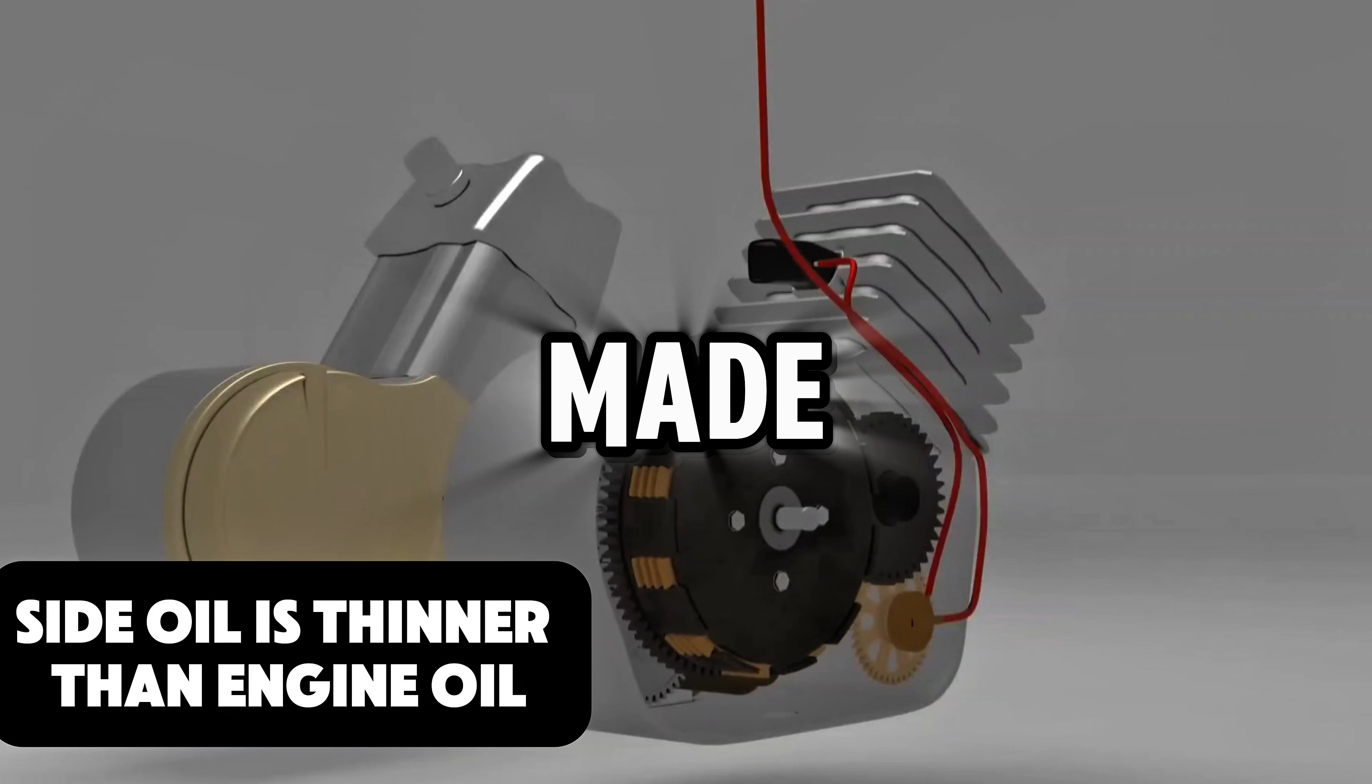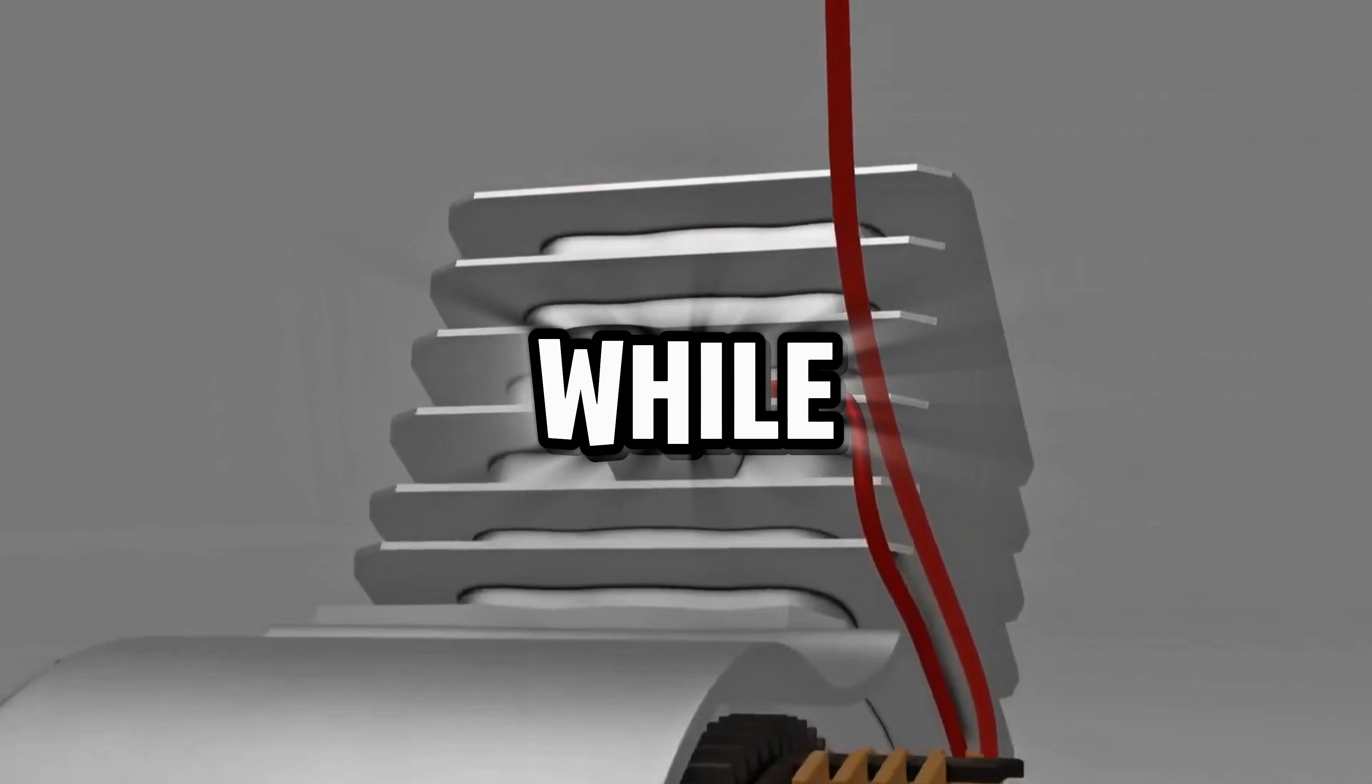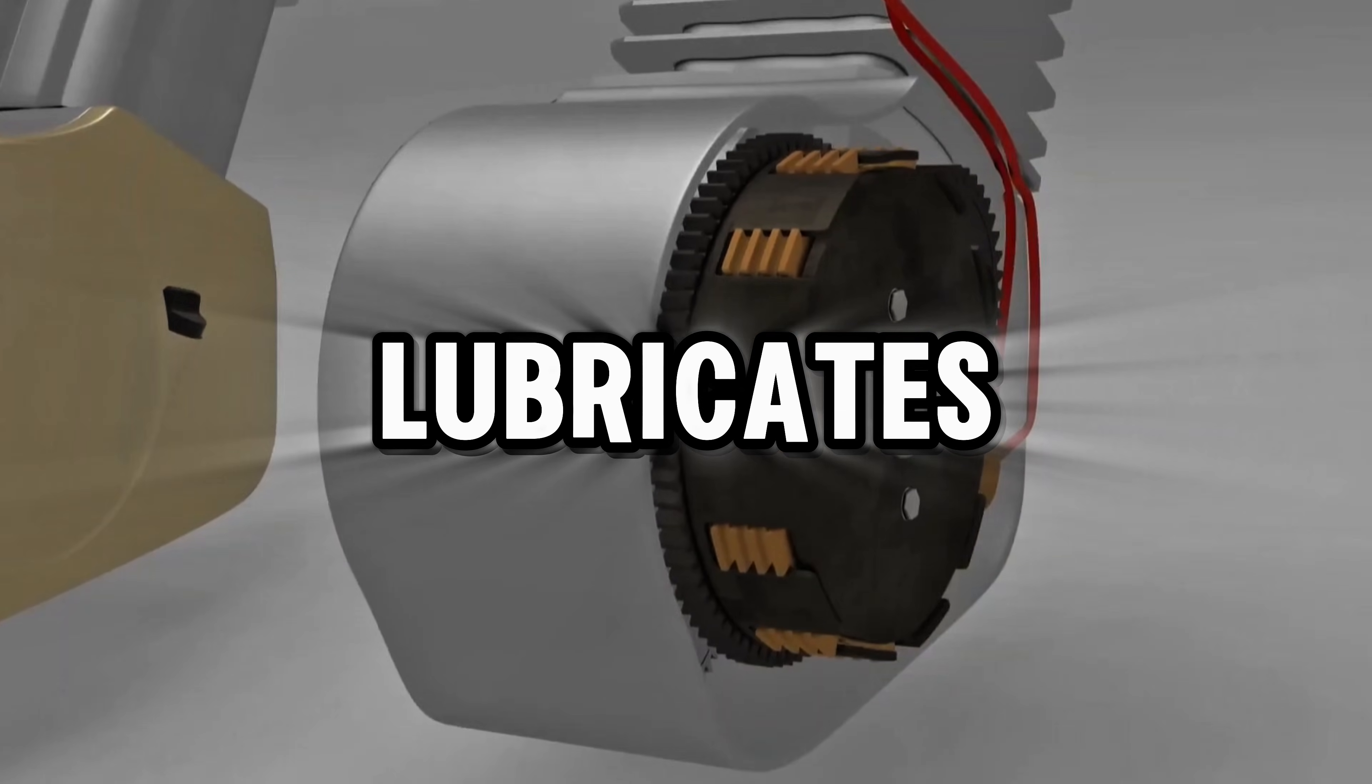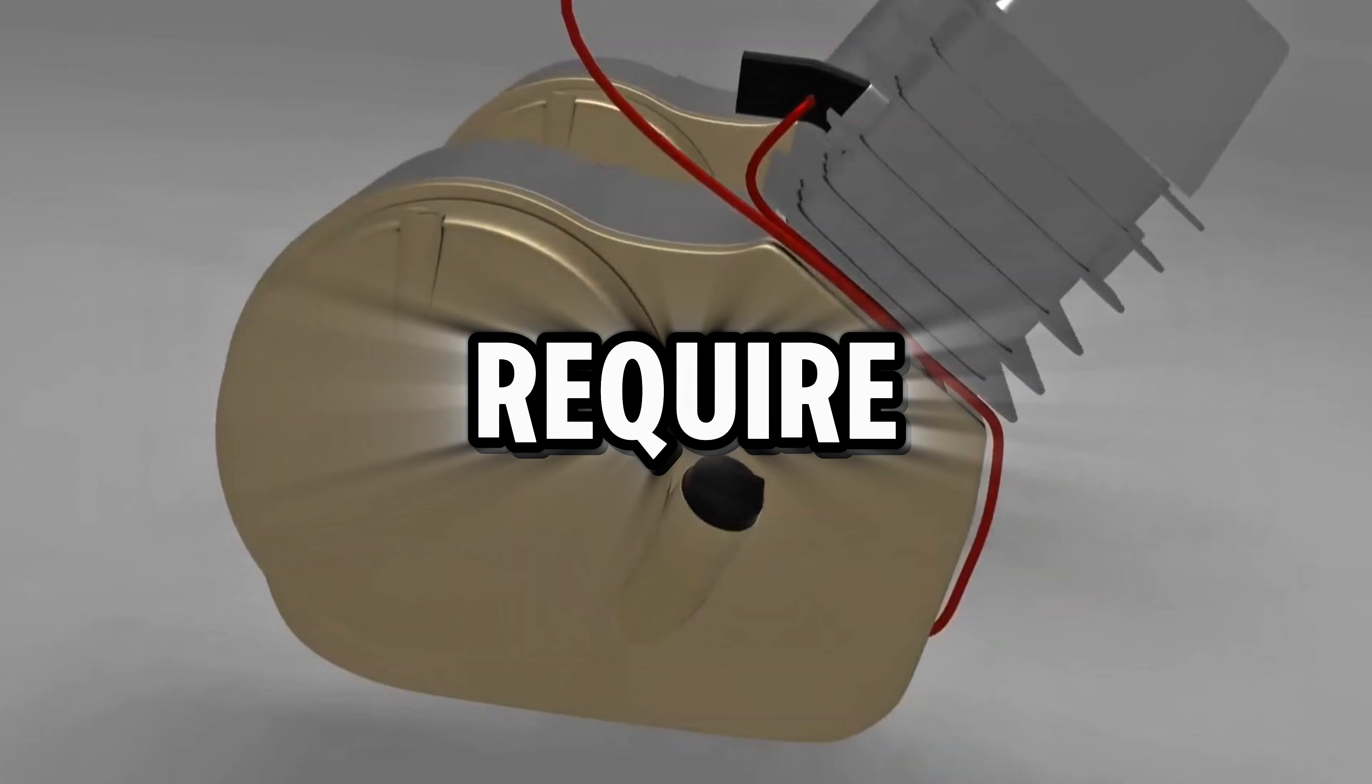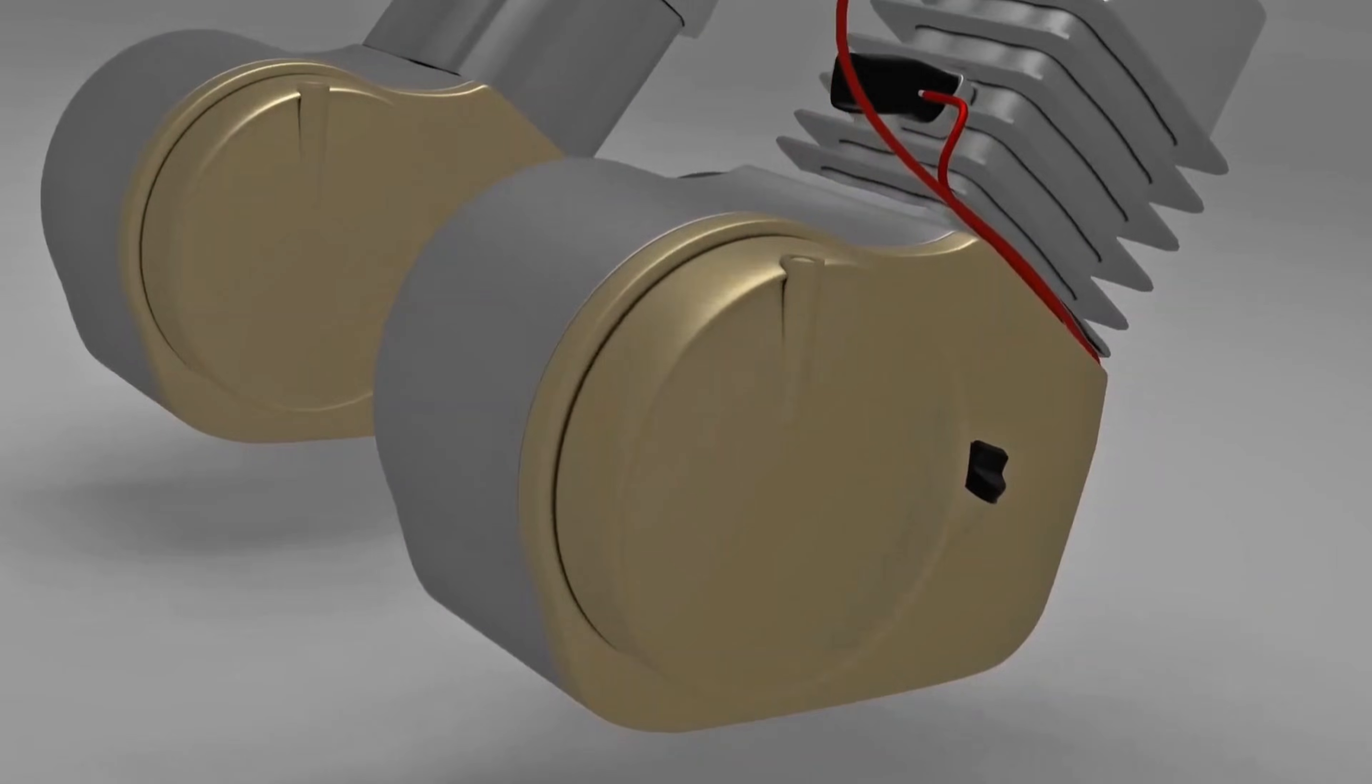Side oil is made thinner, so it can easily mix with the airflow, while regular engine oil is thicker because it also lubricates the transmission. If engine oil were too thin, it would cause rough transmission operation. That's why two-stroke engines require side oil. Hopefully, this explanation adds to our knowledge.